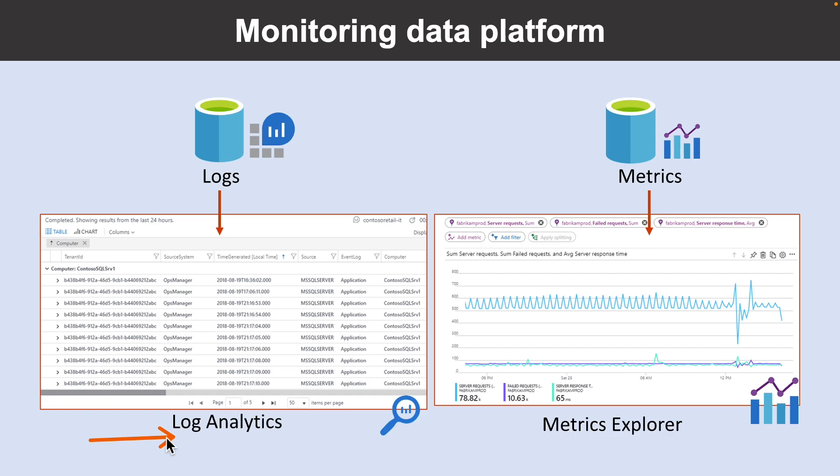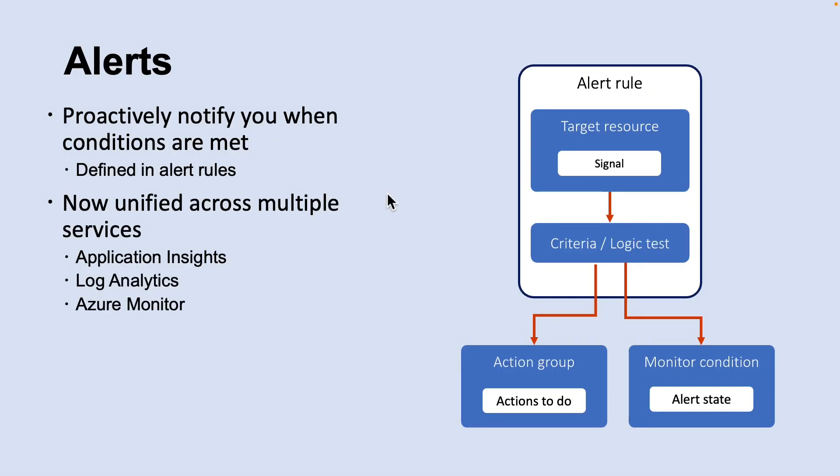You can create and test queries using the Log Analytics page in the Azure portal and then either directly analyze the data using these tools or save queries for use with visualizations or alert rules. Alerts proactively notify you when important conditions are found in your monitoring data. They allow you to identify and address issues before the users of the system notice them. The new unified alert experience in Azure Monitor now includes Log Analytics and Application Insights. The previous alert experience and alert types are called classic alerts.